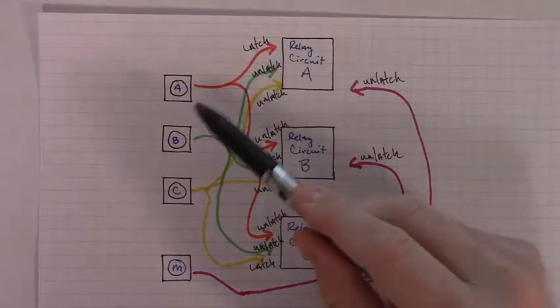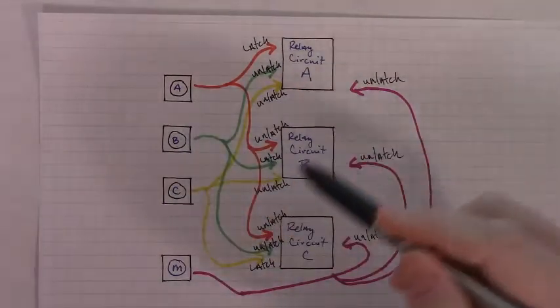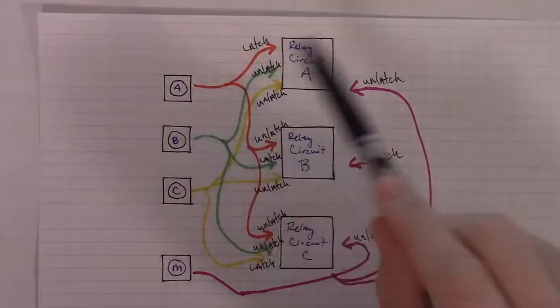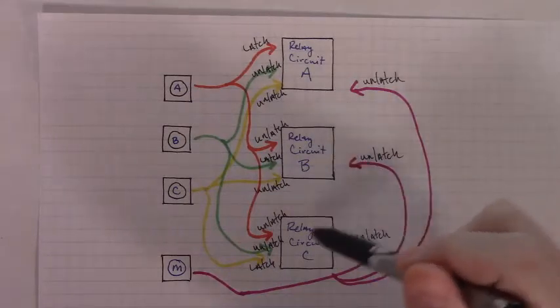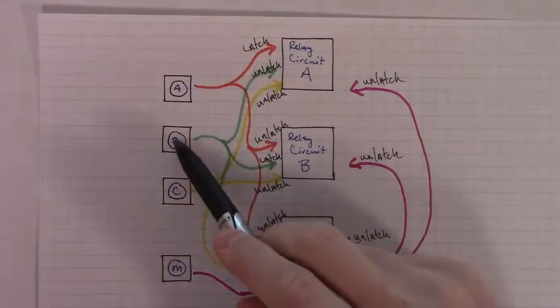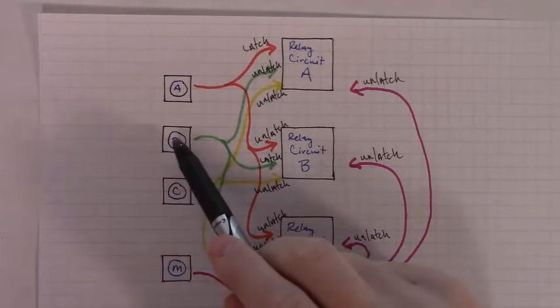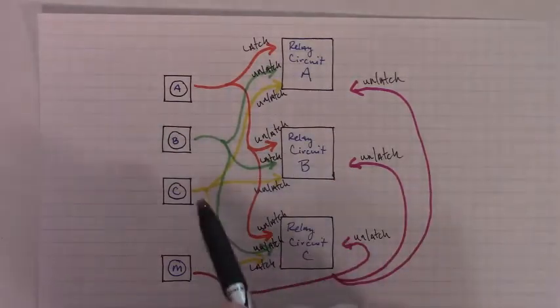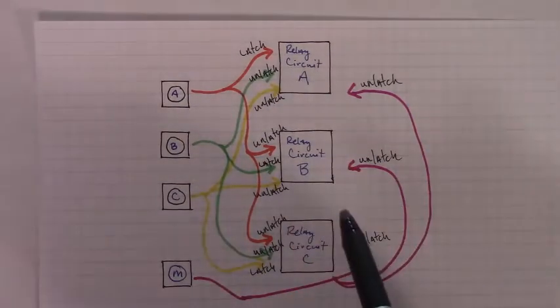That's what we want to happen when each of these buttons is pushed, regardless of the order in which they're pushed either. That if we push A, we want relay circuit A to come on, and relay circuit B and C to turn off if they happen to be on. As well as if the same occurs with B, the same occurs with C. Except that we push B, we want B to latch, A to unlatch, C to unlatch. If we push C, we want C to latch, B to unlatch, A to unlatch.